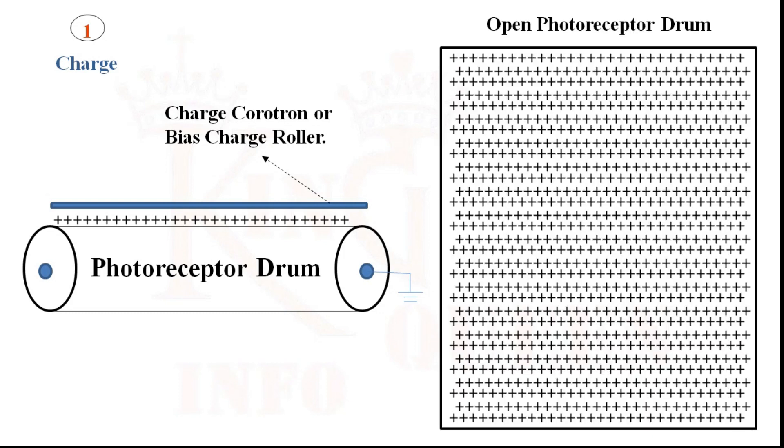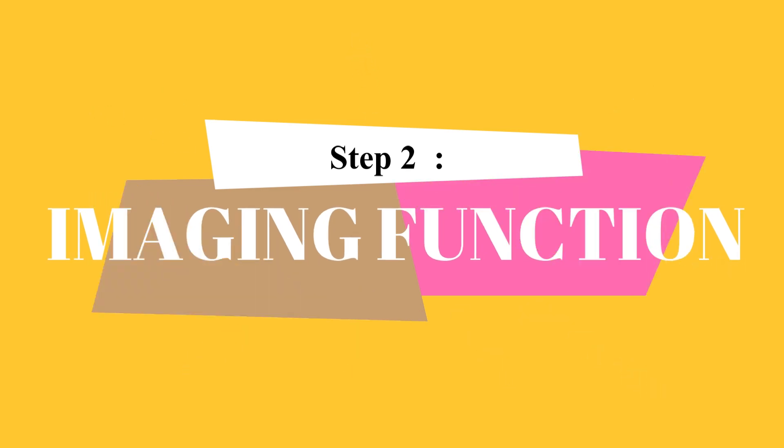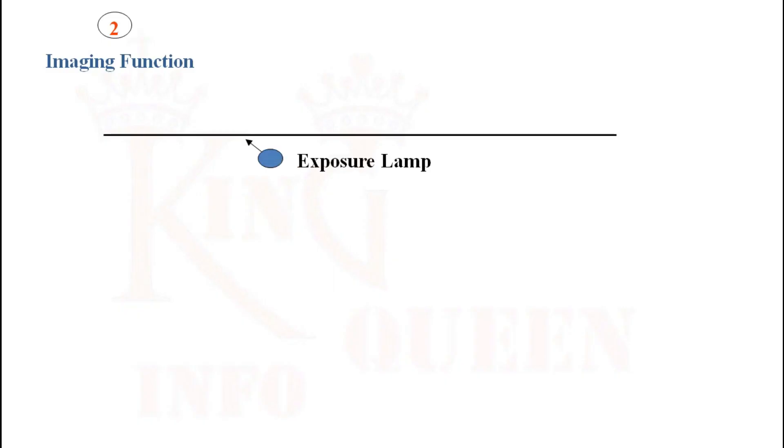Step 2: Imaging function. In this step, the exposure lamp blows and illuminates the original document placed on the document glass. The image of the original document in the form of light is produced.